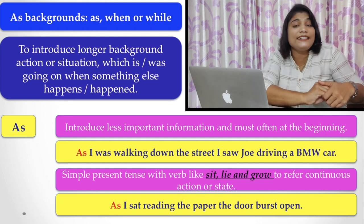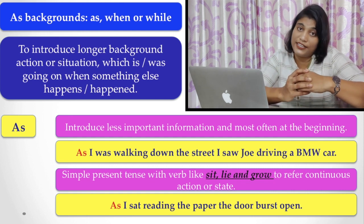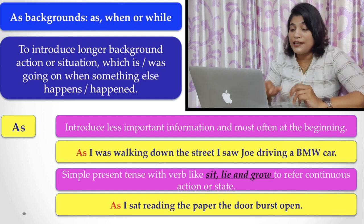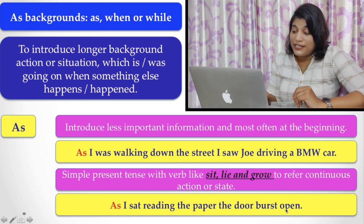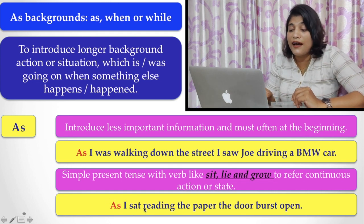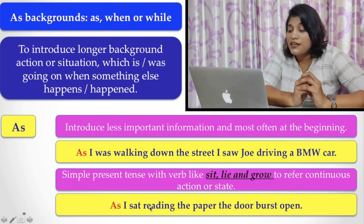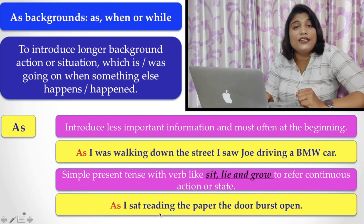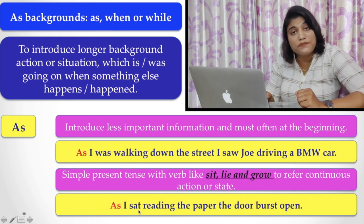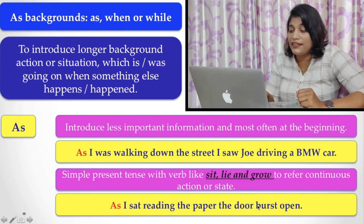Similarly, when a simple past tense is used with verbs like sit, lie, and grow to refer to a continuous action or state, we can use as. For example: 'As I sat reading the newspaper, the door burst open.' Here, 'as I sat reading the newspaper' is a continuous action in simple past tense, and 'the door burst open' is the main event. We can use as with simple past tense to show this continual action alongside another action.